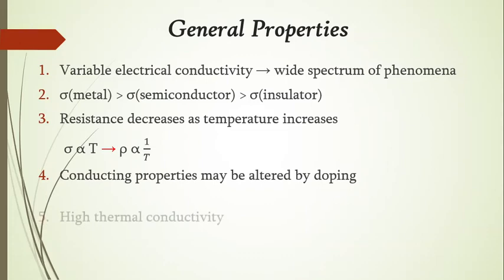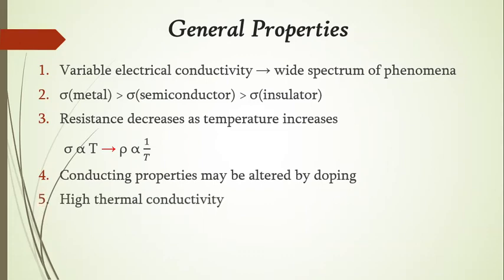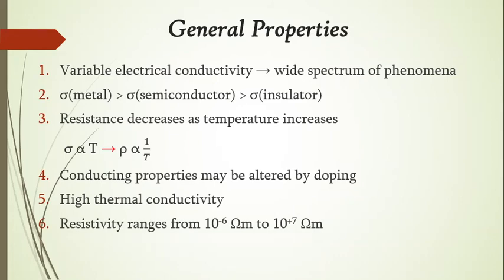The next property is high thermal conductivity — semiconductors have high thermal conductivity. Another property is based on resistivity: the resistivity range of semiconductors is from 10 raised to minus 6 ohm meter to 10 raised to plus 7 ohm meter, and this is the range where semiconductor resistivity can be observed.